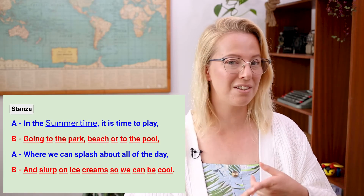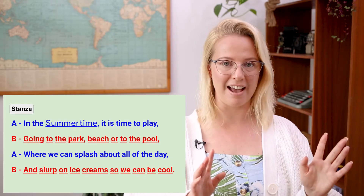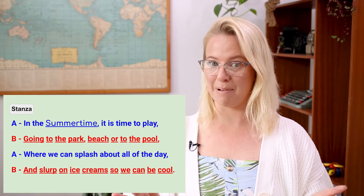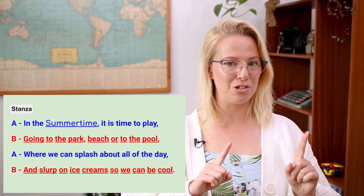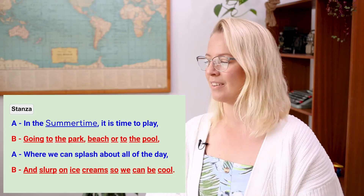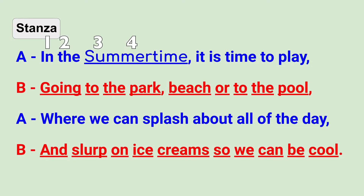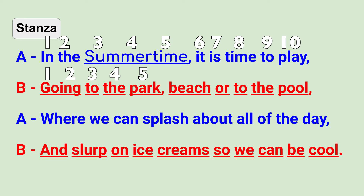We also need to check that we've got ten syllables in each line — this is the tricky part. Let's double-check: 'In the sum-mer-time it is time to play' — yes, ten syllables. 'Go-ing to the park, beach or to the pool' — very good. You can check the other lines yourself, but counting syllables is something to really focus on when writing your own sonnet.